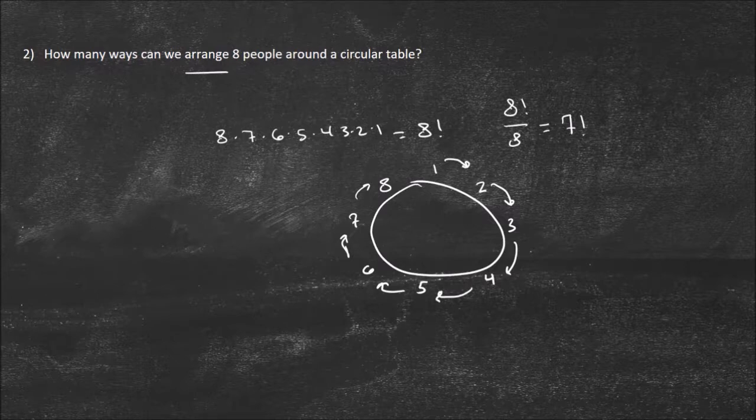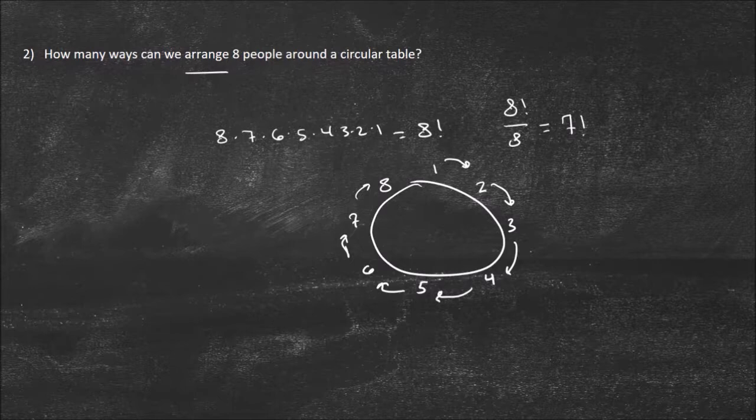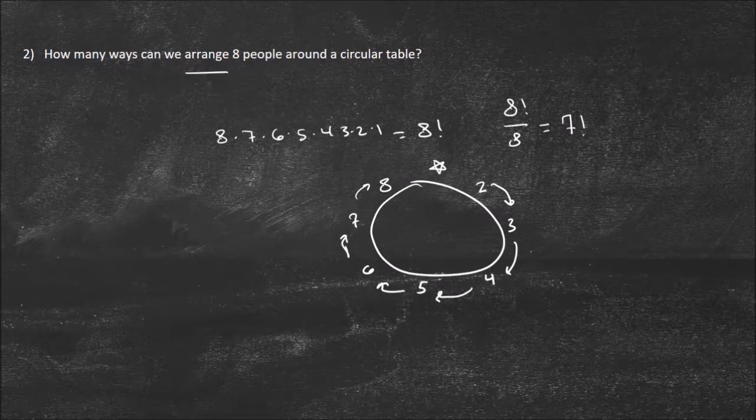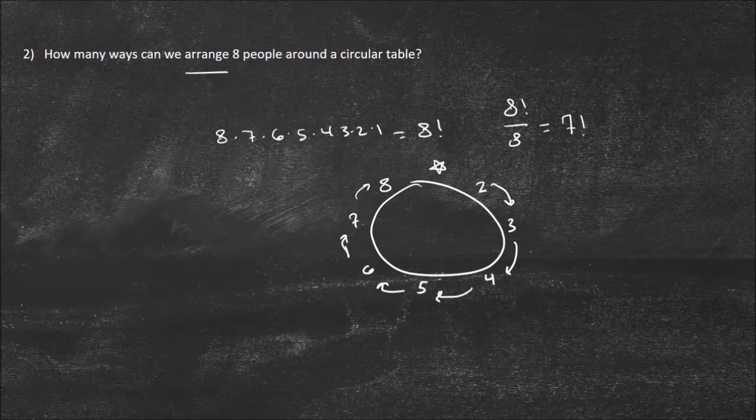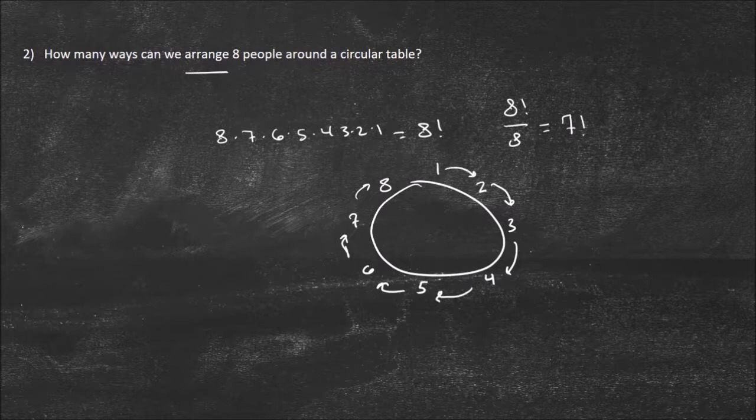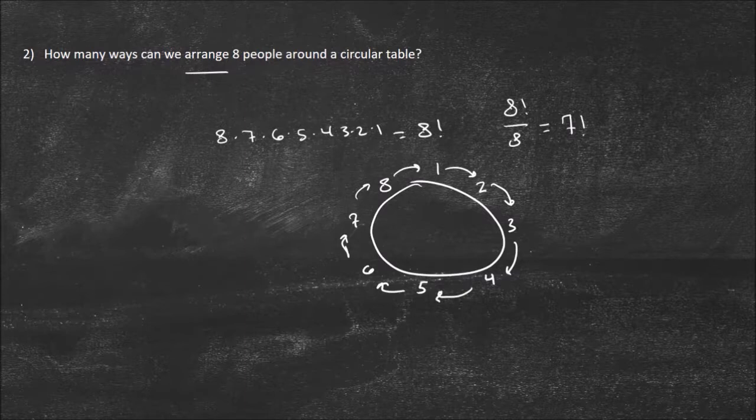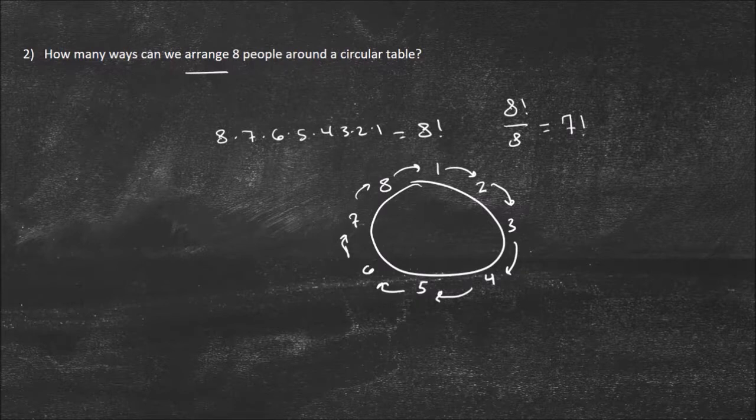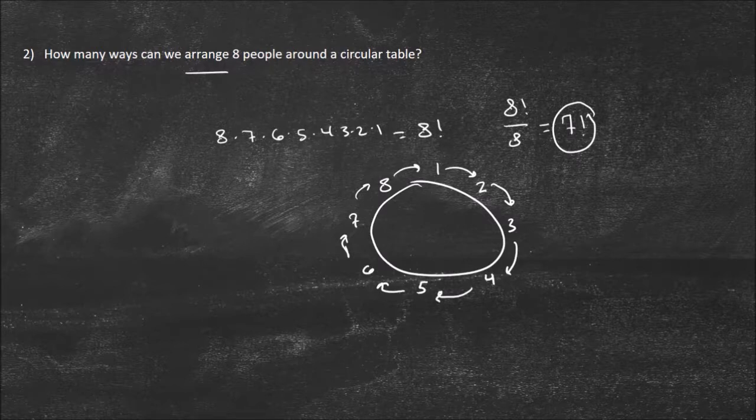That's what gets the effect of the circular table. Notice that is actually seven factorial. Another way to think about it is you can think about this first position as an anchor position that stays the same all the time. Then you have seven other seats to choose from, which would be seven factorial. The best way is to start with organizing people in a line, then think, what do I need to change because it's a circular table? Everyone could move over one seat and be in the same arrangement.